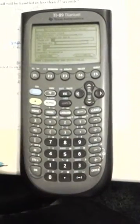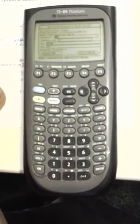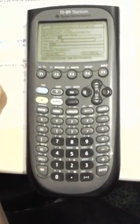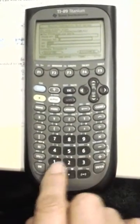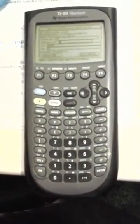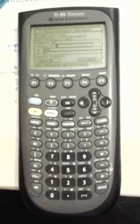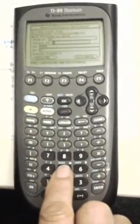The first thing it asks for is the mean. The mean in this problem is 30 seconds, so enter 30. Then go down. The second thing it asks for is the standard deviation, which is 5 seconds, so enter 5.